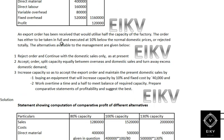After that, a new export order has been received that would utilize half of the capacity of the factory. The order has either to be taken in full and executed at 10% below the market price, or rejected totally. The alternatives available for management include: either accept the entire order at 90% of the sale price, or reject the entire order.